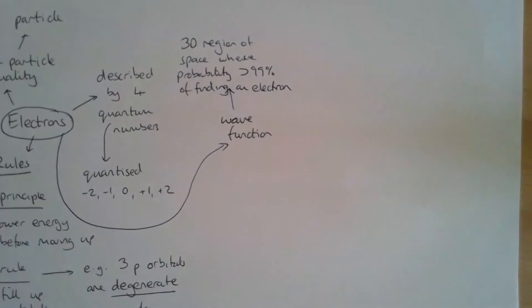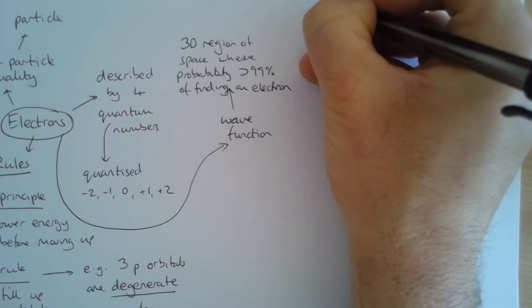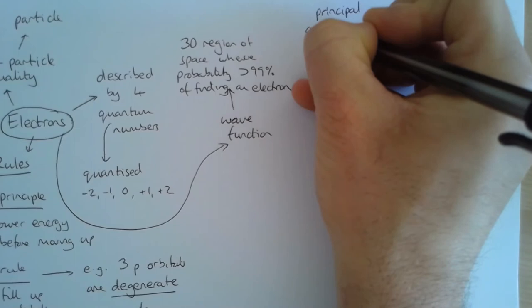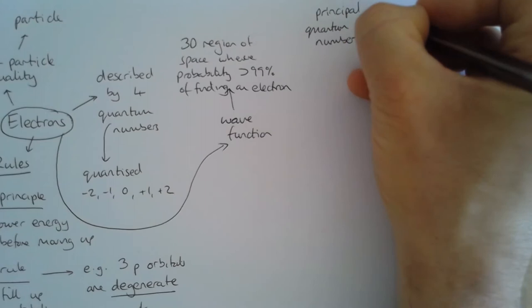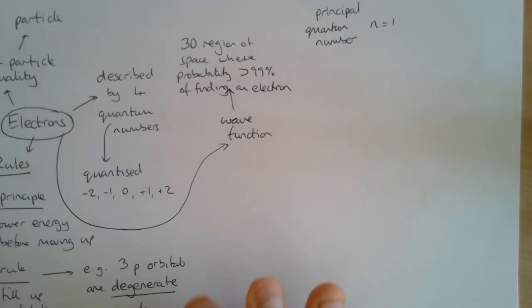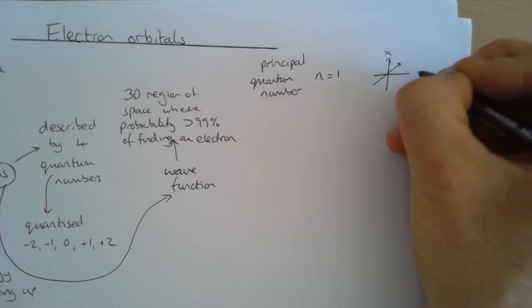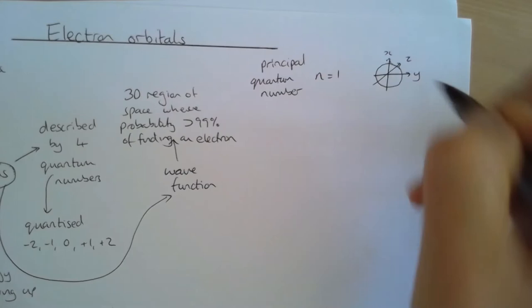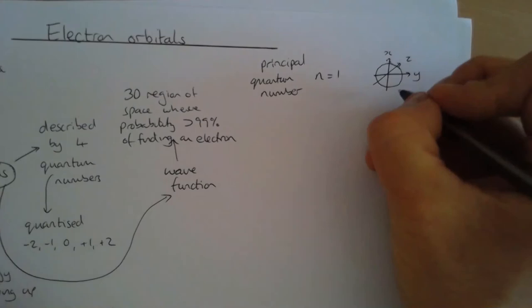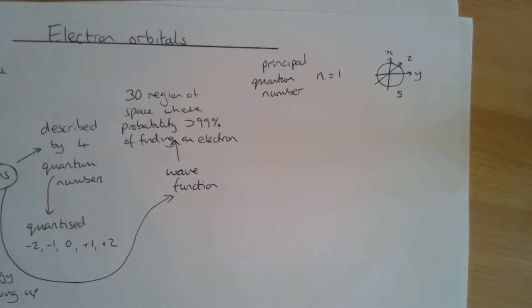That allows us to think about the shapes of orbitals. Our first quantum number is the principal quantum number, described by n. For n = 1 there is only one orbital. Drawing three Cartesian coordinates x, y, and z, we find that orbital is a sphere — we call that the s subshell, and it's the only orbital that exists for that principal quantum number.